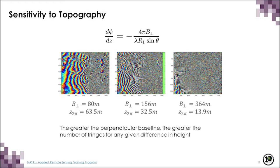The sensitivity to topography depends directly on the perpendicular baseline. Three interferograms are shown for the same area with perpendicular baselines of 80 meters, 156 meters, and 364 meters. As the perpendicular baseline increases, the sensitivity to topography increases as well. However, we can also observe that as the perpendicular baseline increases, the fringes start to get lost, because coherence decreases.